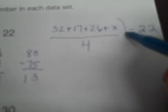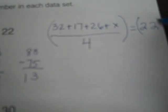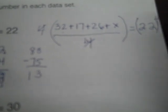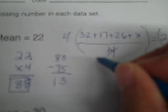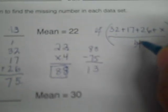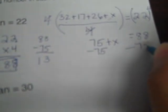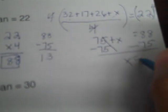The first step would be to multiply both sides by the reciprocal, because I want to get rid of the divided by 4. So I would multiply by 4, and these would cross-cancel to give 1 and 1. What you do to one side, you do to the other. So 22 times 4 is 88. Now I combine 32 plus 17 plus 26, which gives me 75. So 75 plus x equals 88. I'm going to subtract 75 from both sides, and I get x equals 13.